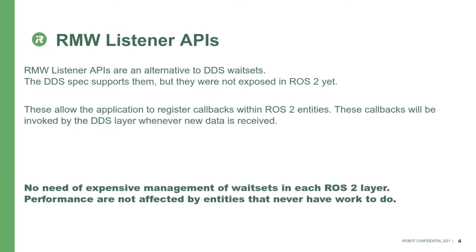The RMW listener APIs are an alternative to wait sets. They already exist in the DDS specification and are already supported by all tier-one DDS implementations. However, they were not exposed in ROS2, so we had to do some work to let applications use these APIs. They are functions that allow the application to register callbacks into publishers, subscriptions, and other entities. These callbacks will be invoked by the DDS or middleware layer whenever new data is received. You can already see the differences from a wait set approach.